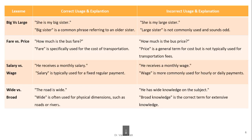More examples of synonym misuse: 'She is my big sister' is correct, but 'she is my large sister' is incorrect. 'How much is the bus fare' is correct, but 'how much is the bus price' is not. 'Salary' is typically used for fixed regular payment, while 'wage' is generally used for hourly or daily payment. 'Wide' is used for physical dimensions such as roads or rivers, while 'broad knowledge' is the correct term for extensive knowledge.